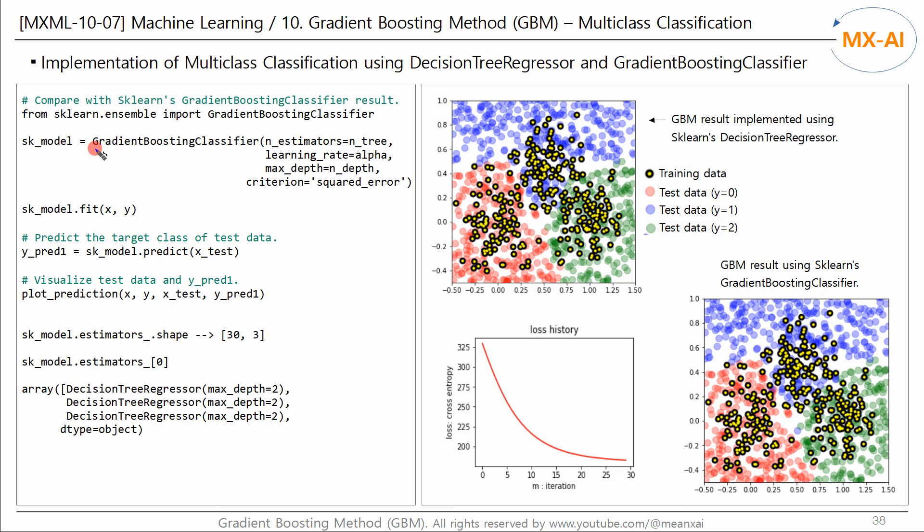This time, let's try the gradient boosting classifier library. This library automatically works multiclass classification if the target Y has more than two classes. Fit this model with training data X and Y, and predict the target class of the test data. This library makes it very easy to implement multiclass classification.